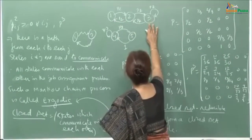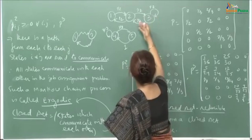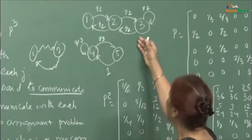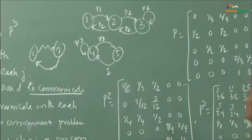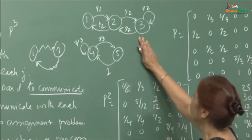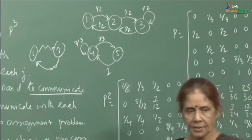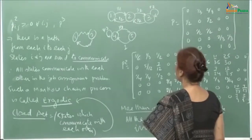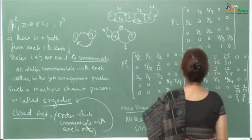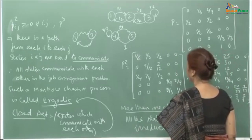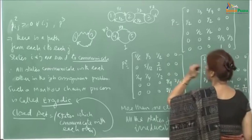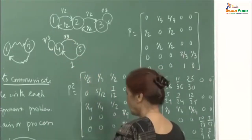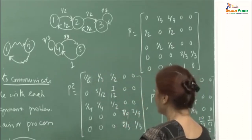Consider a transition diagram with 5 states: states 1, 2, and 3 all communicate with each other — there is a path from 1 to 3, 3 to 2, 3 to 1, and so on. There is also a path from 4 to 5 and 5 to 4, but there is no path from states 1, 2, 3 to states 4 and 5. In the transition matrix, you see no arc from 1 to 4, 1 to 5, 2 to 4, 2 to 5, or from 3, and no arc from 4 or 5 back to 1, 2, or 3.